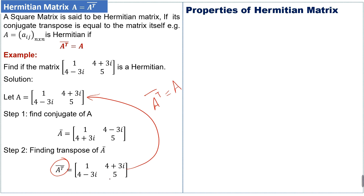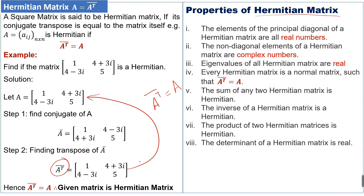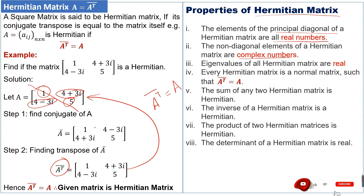Now we discuss the properties of the Hermitian matrix. First, the elements of the principal diagonal of a Hermitian matrix are all real — we can see that all principal diagonal entries are real. Second, the non-diagonal elements of a Hermitian matrix are complex numbers — the off-diagonal entries are complex. Third, the eigenvalues of a Hermitian matrix are all real.